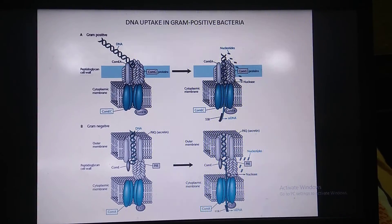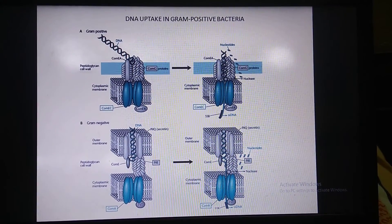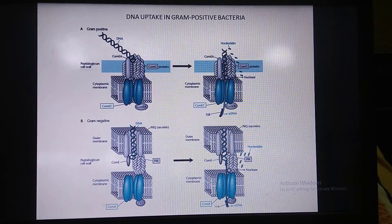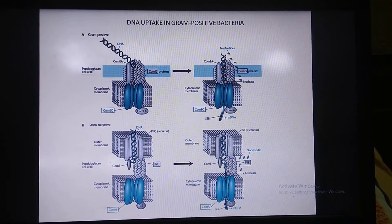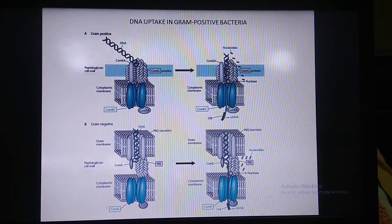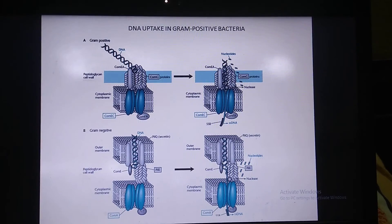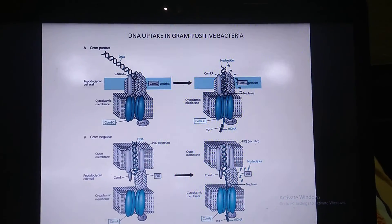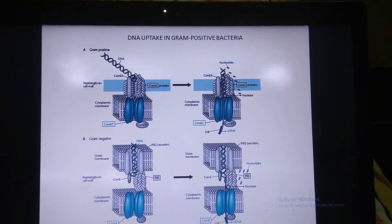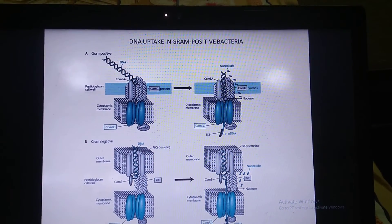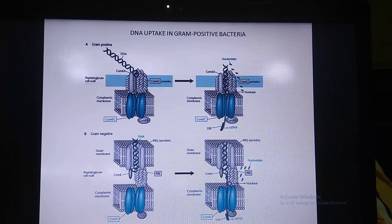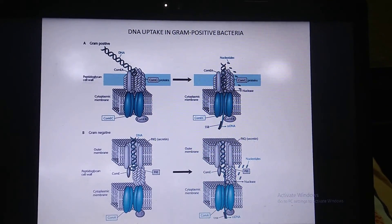When bacterial cells die in a culture, their cell bursts and components like proteins and DNA are taken up by neighboring bacteria. During transformation, the double-stranded DNA binds to the cell but only a single strand enters; the other strand is degraded. That single strand then has various effects within the bacterial cell.